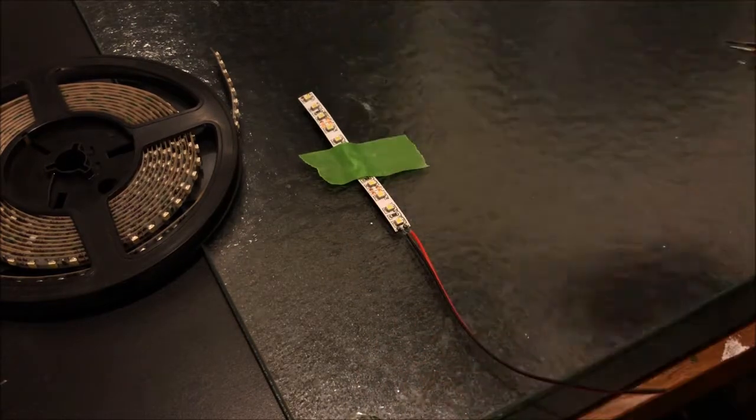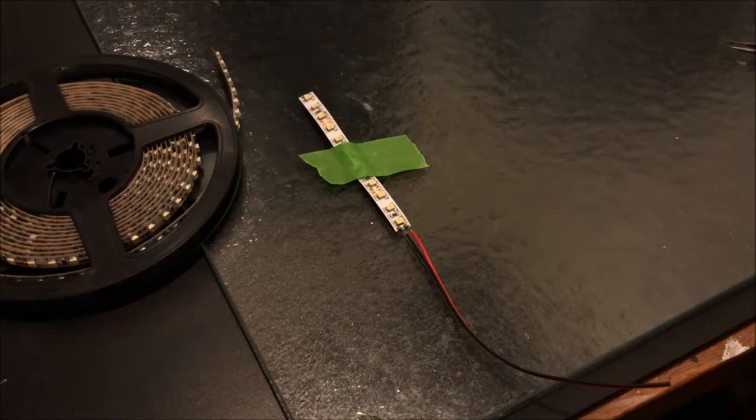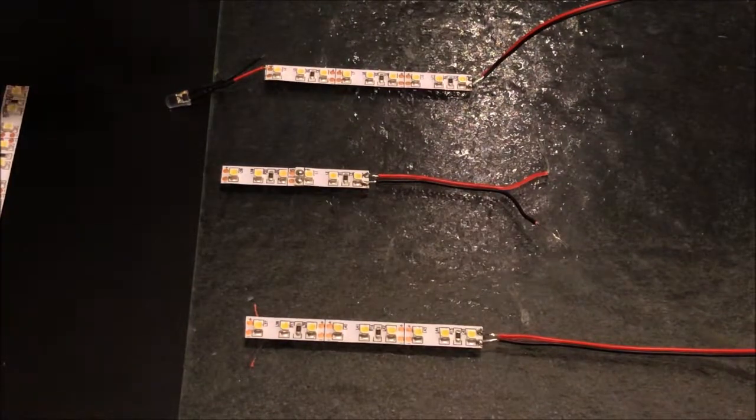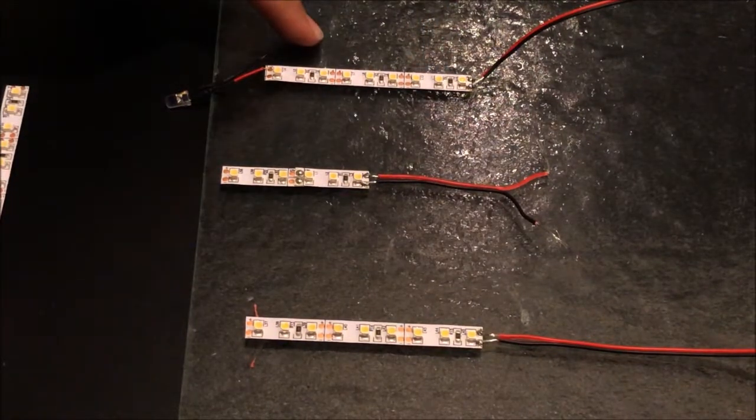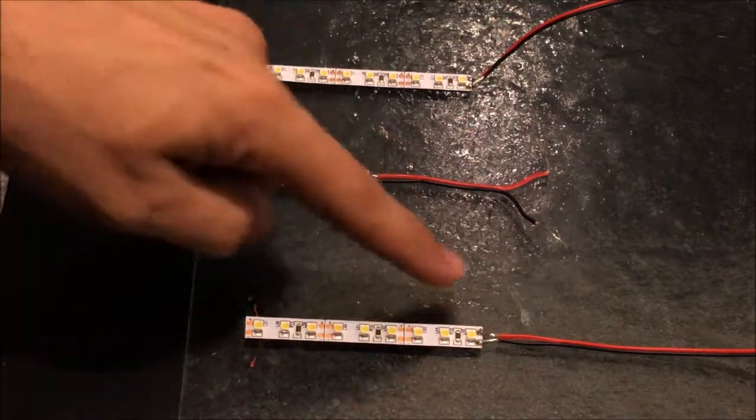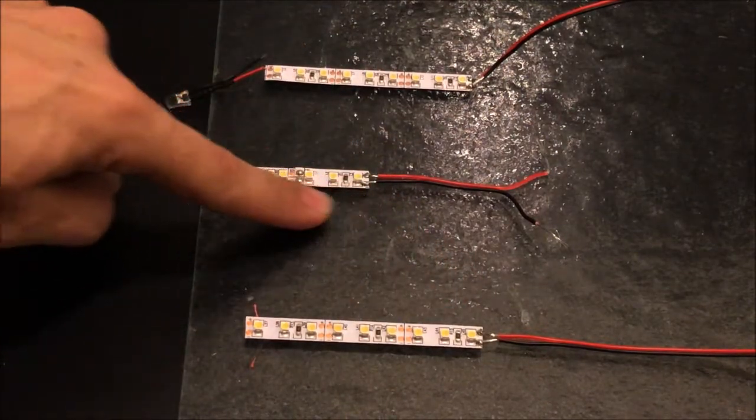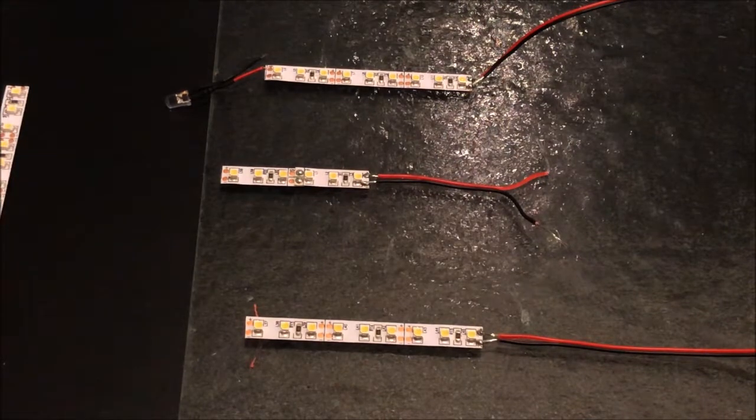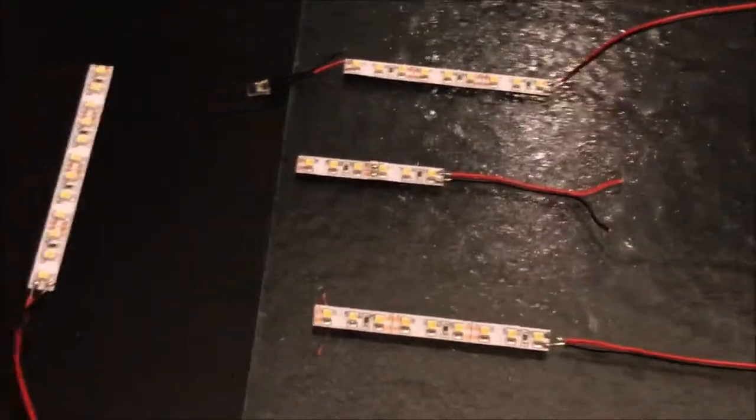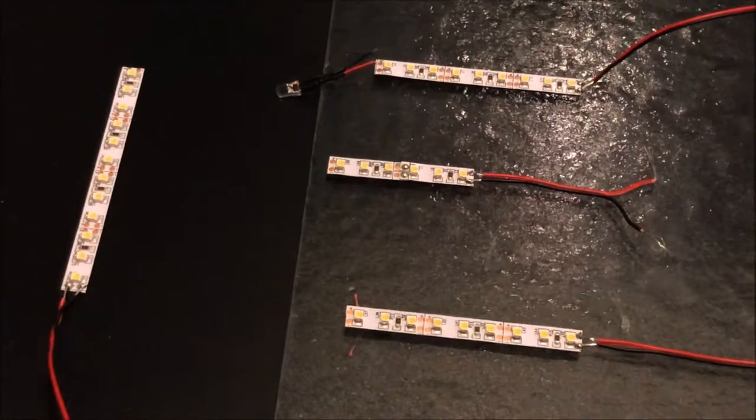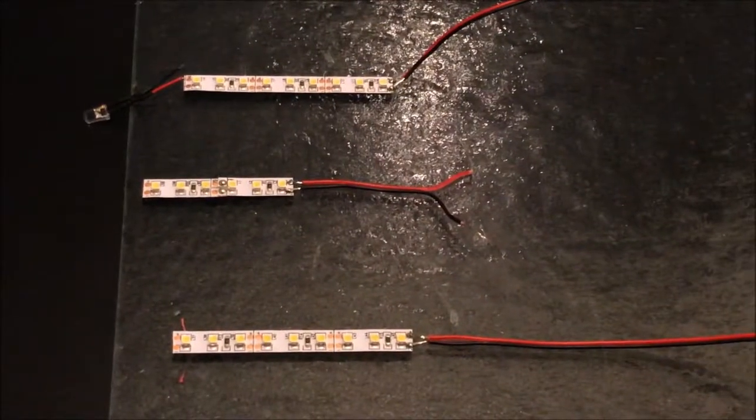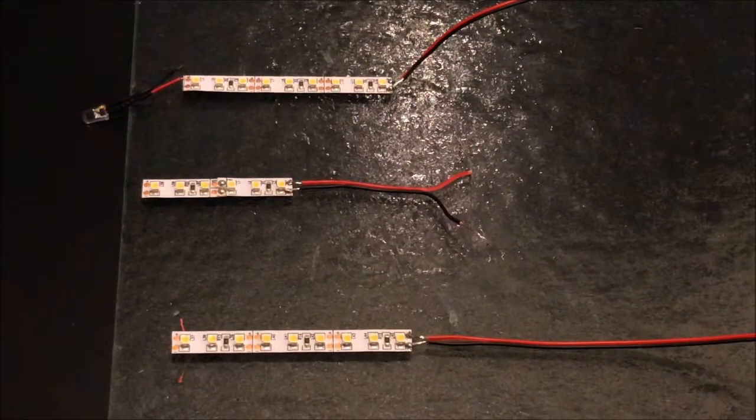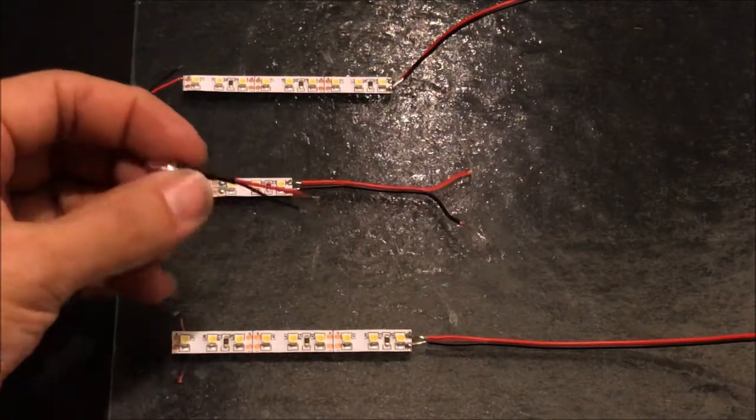Now imagine we've made an LED strip for our starboard pylon, our port pylon. We've made an LED strip to put in the main part of our ship, and we've made one to go into our saucer section. The next thing we want to do is start working with those pre-wired LEDs.